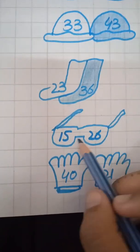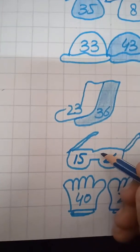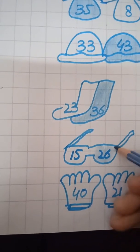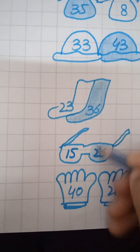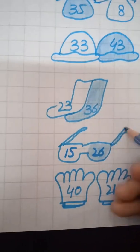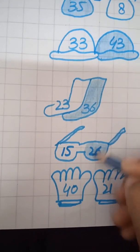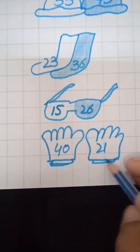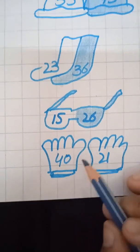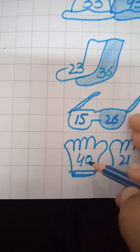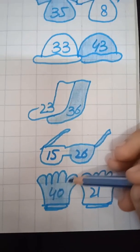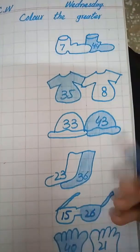And we have done our coloring here. Now look at these numbers, 15 and 26. So we will color the area of 26 only. Like this. Now look at these gloves, 40 and 21. So 40 is greater. We will color it. So students, look at this. We have done our coloring and we have done this activity too. So our classwork is done.